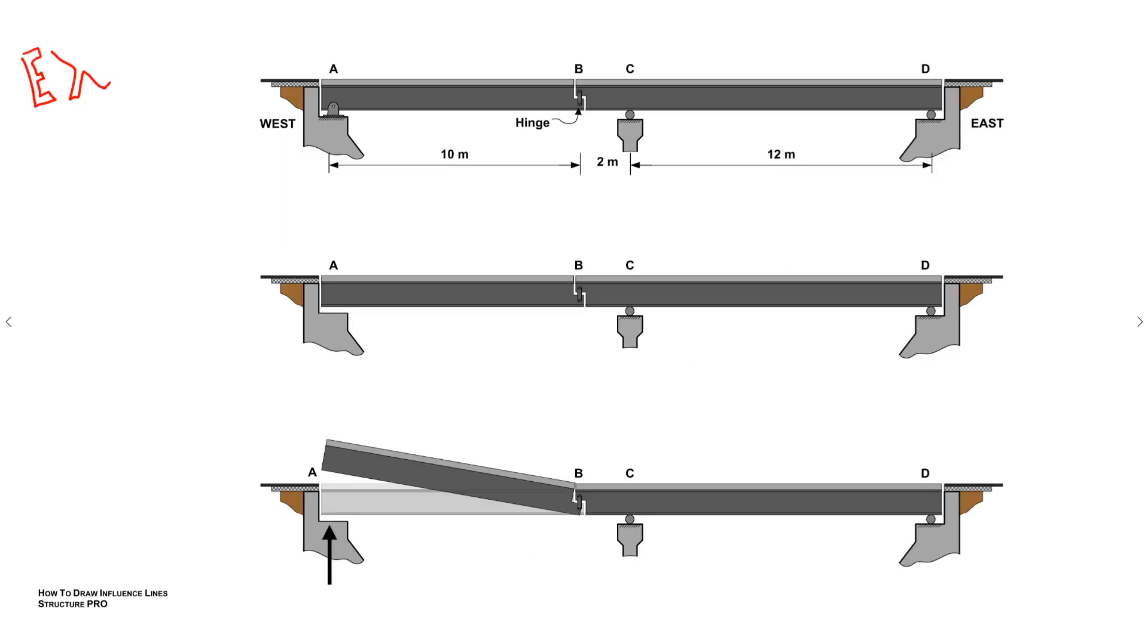So we can see we have the original bridge at the top. And let's say we want to know something about the reaction at A. So what is the influence line for the reaction at A, for the support reaction, as a truck or some kind of moving load is moving across this bridge? Alright, so that's our big question. So all we got to do, we just got to follow the three steps from the Müller-Breslau principle.